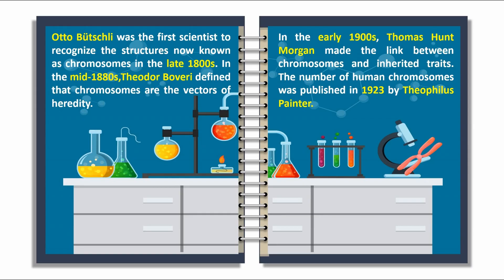Otto Buschle was the first scientist to recognize the structures now known as chromosomes in the late 1800s. In the mid-1880s, Theodore Bavary defined that chromosomes are the vectors of heredity. In the early 1900s, Thomas Hund Morgan made the link between chromosomes and inherited traits. The number of human chromosomes was published in 1923 by Theophilus Painter.